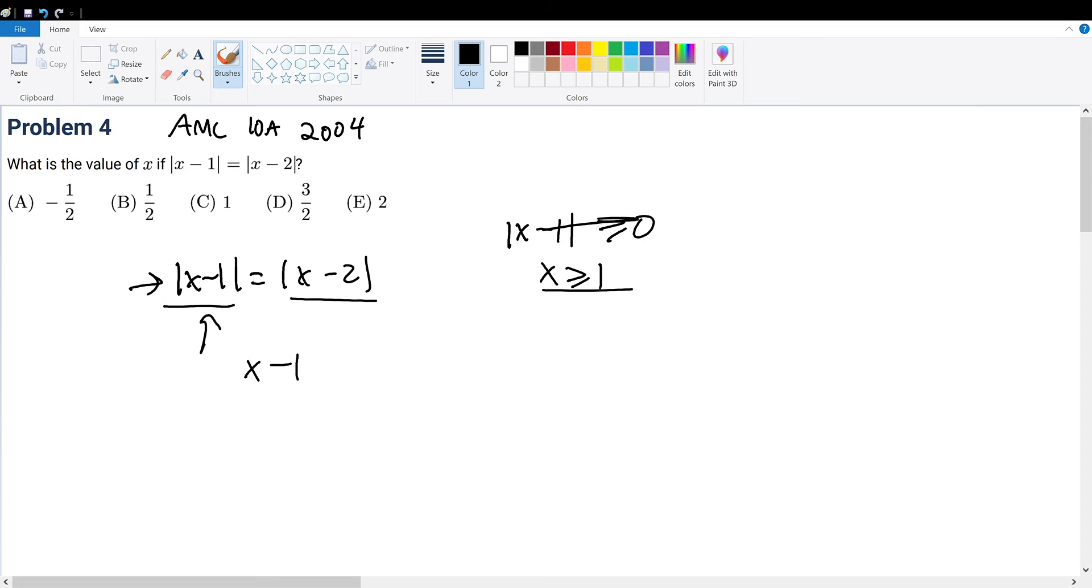But for the sake of more generality, let's just do x minus 1 absolute value is greater than 0, not equal to 0. This will reduce the case to be more specific, so x would be greater than 1, meaning if x is greater than 1, then the left-hand side would be positive.